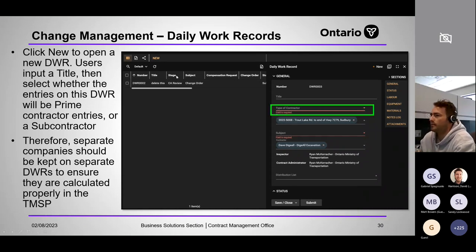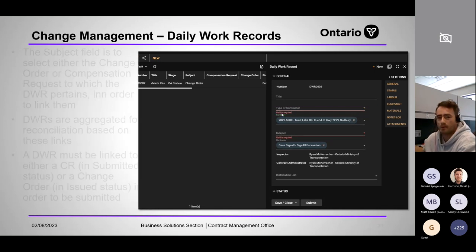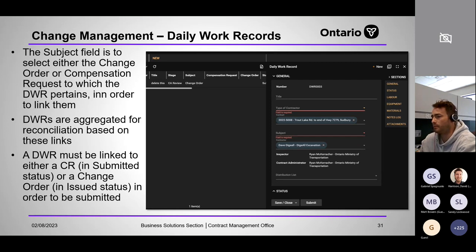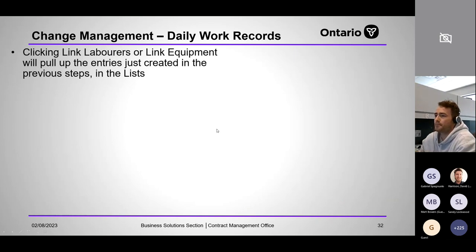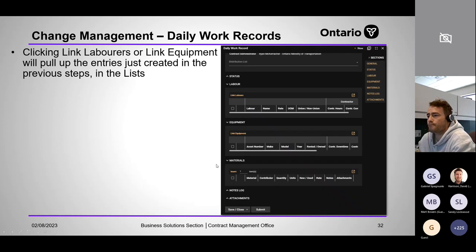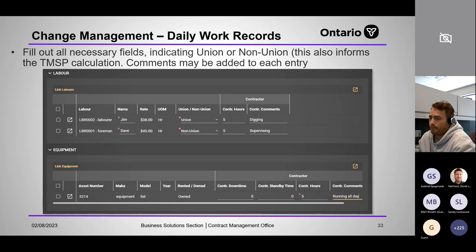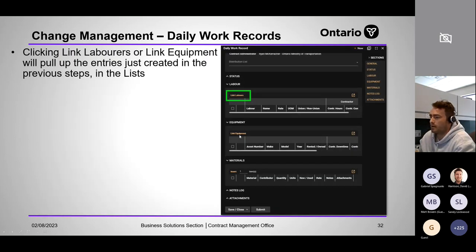Moving on to daily work records. Click New — you've got the type of contractor field: prime or sub. That tells the system how to handle it in the TMSP. For prime, you'll also indicate union or non-union. You then link laborers, link equipment, and for materials you just insert a line and type the material directly. The link labor function pulls up the labor list we just reviewed.